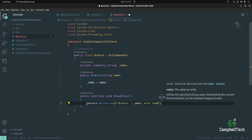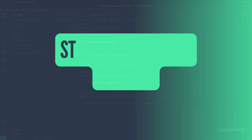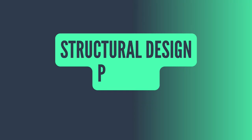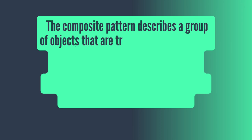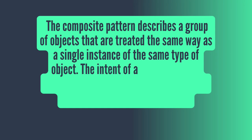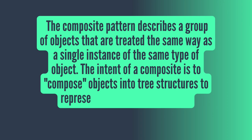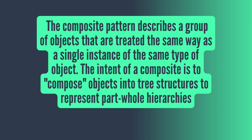Today, I'm going to show you how to implement the composite design pattern in C#. The composite pattern is a structural design pattern that can be viewed as a partitioning design pattern. It describes a group of objects that are treated the same way as a single instance of the same type of object.